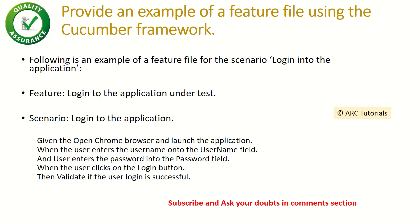The next question is: provide an example of a feature file. Here is a simple example. If we want to log into the application under test, we use the four keywords — given, when, then. For instance: 'given open the Chrome browser and launch the application, when the user enters credentials, then validate the login.' That is how we write our feature file. I'll cover this in more detail in upcoming tutorials.